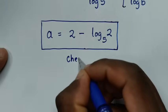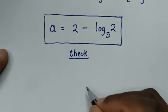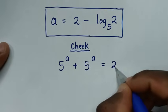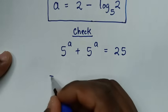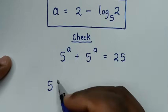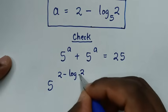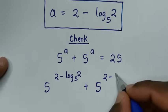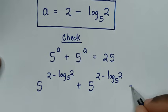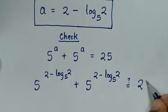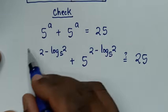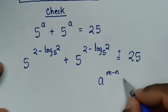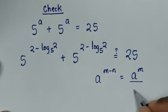Now let's check if this answer is correct. Substituting back into 5 power a plus 5 power a equals 25, we replace a with 2 minus log of 2 base 5. This is in the form of a power m minus n, which equals a power m over a power n.